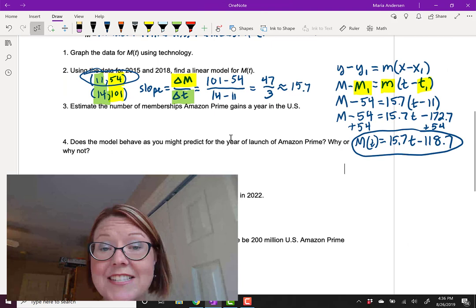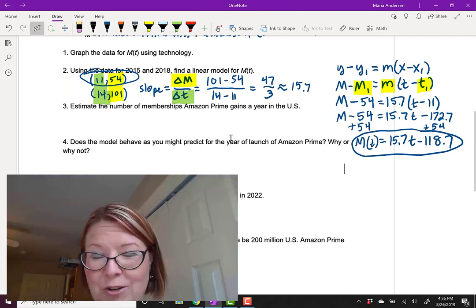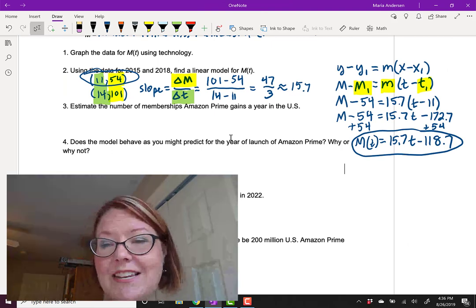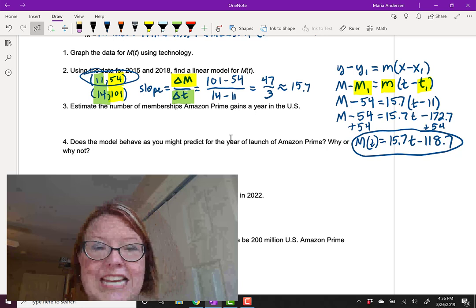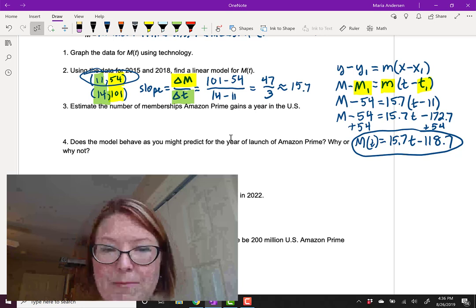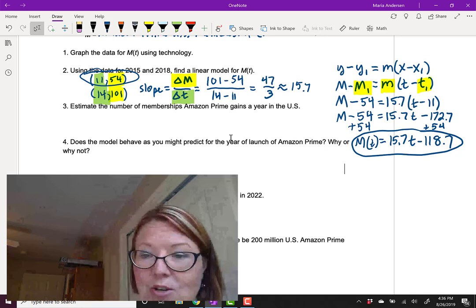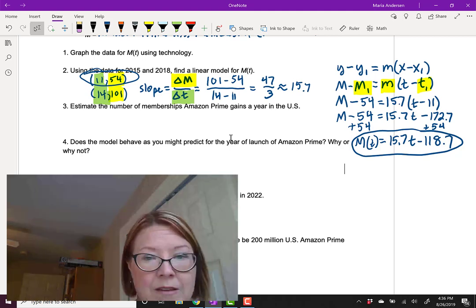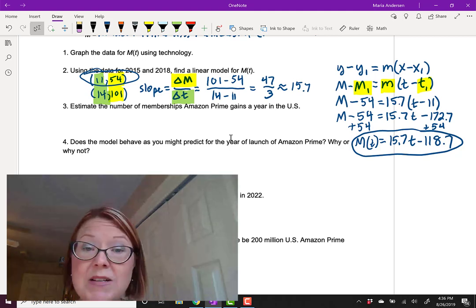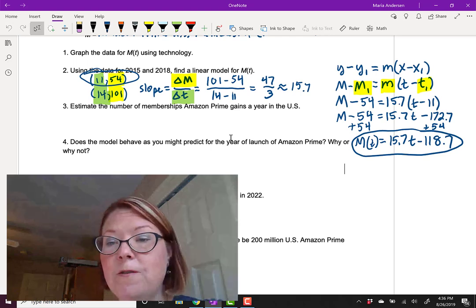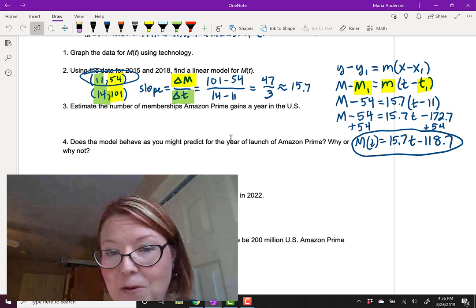We can use the slope of this model, M of T equals 15.7 T minus 118.7, to estimate the number of memberships Amazon Prime gains in a year in the US. That would be the slope of the model. So we would say that Amazon Prime gains about 15.7 million memberships a year.